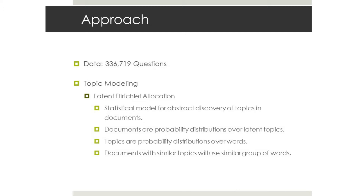There were two approaches I took. One was topic modeling. We had 336,000 English questions - the dataset was full of Kenyan, Swahili, and many different languages, but I focused on English. The first approach was topic modeling, using an algorithm called Latent Dirichlet Allocation, which is basically a statistical model for abstract discovery of topics in documents.